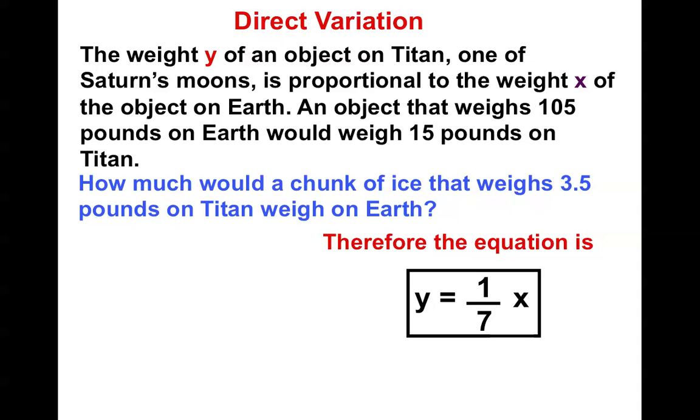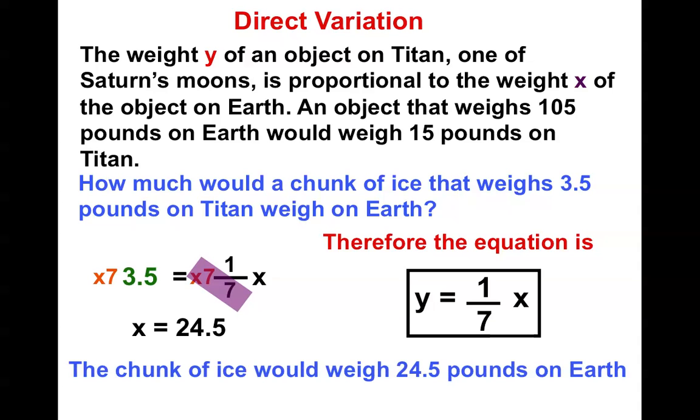How much would a chunk of ice that weighs 3.5 pounds on Titan weigh on Earth? Well, I simply plug in 3.5 in for y, because that's the amount of weight on Titan. Then all I have to do is multiply by 7, multiply by 7, and I find out that a chunk of ice would weigh 24.5 pounds on Earth.